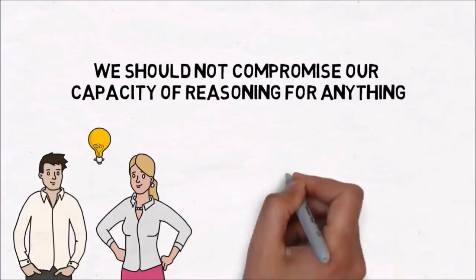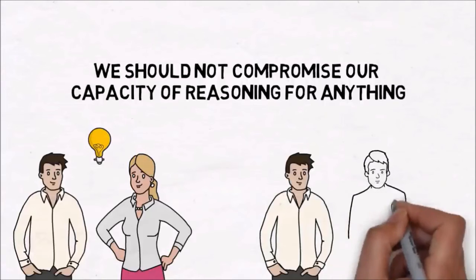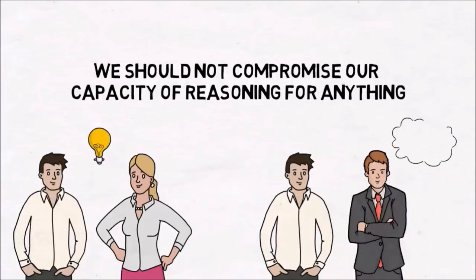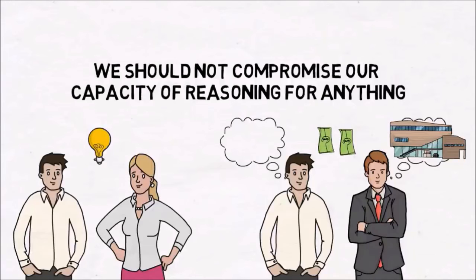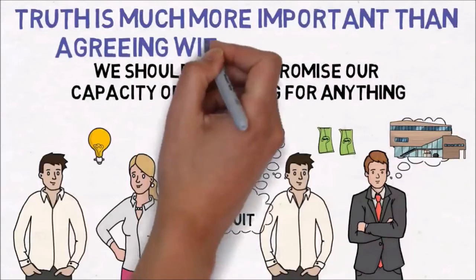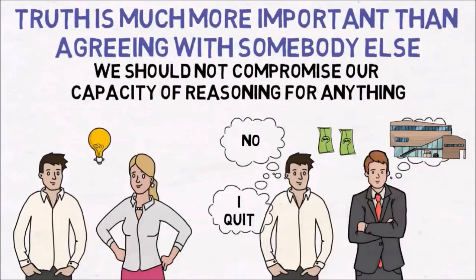For example, if you are the co-founder of a small company, and the main founder, who is also your friend, tells you about their strategy to buy another small company, and you both know that company has serious financial problems and debts, you should inform your friend that you disagree with their decisions. You should enumerate all the reasons for that, enumerate all the negative consequences that can happen, and even resign if your friend still doesn't listen to you. Truth is much more important than agreeing with somebody else, no matter how close you are to each other.